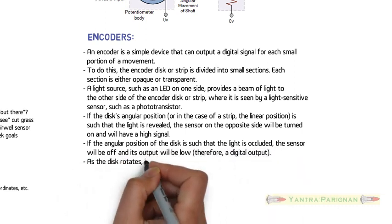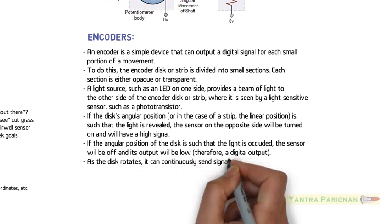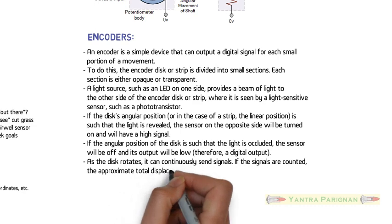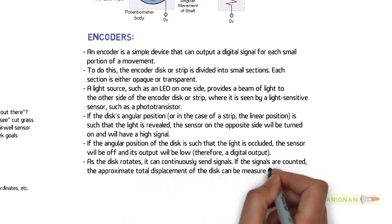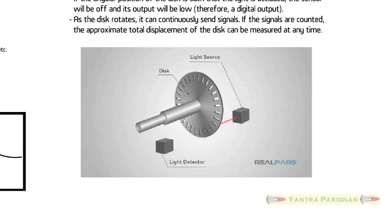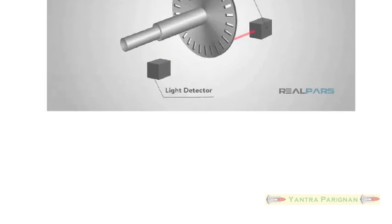As the disk rotates, it can continuously send signals. If the signals are counted, the approximate total displacement of the disk can be measured at any time. The animation shows the basic principle behind the working of an encoder. There is a light source on one side to provide light and a light-sensitive sensor on the other side to detect a beam of light and in between a rotating disk is placed to measure the displacement in the form of signals.